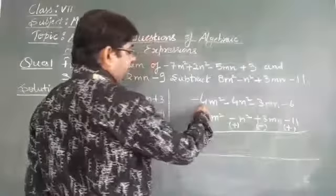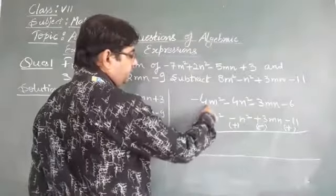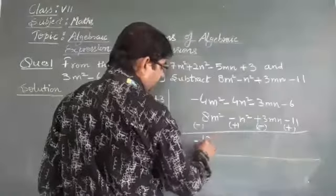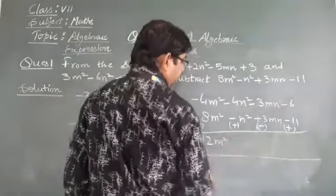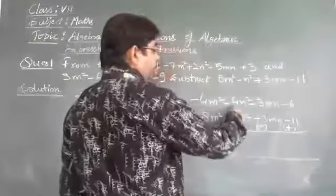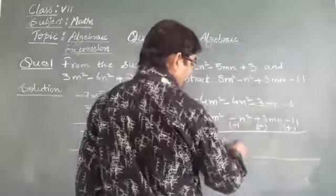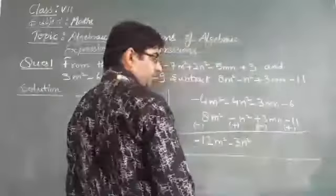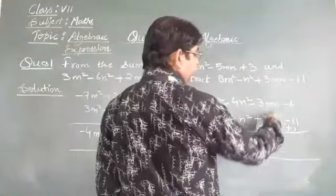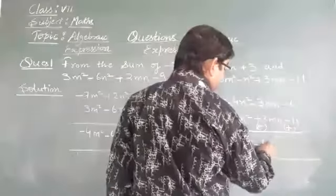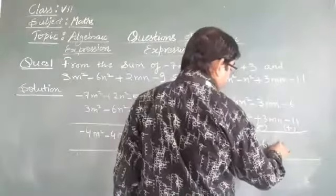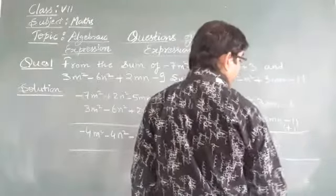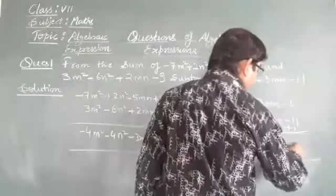So minus 4m square and minus 8m square, we will get minus 12n square. Minus 4n square plus n square, we will get minus 3n square. Minus 3mn and minus 3mn gives minus 6mn. Minus 6 and plus 11, we will get plus 5.